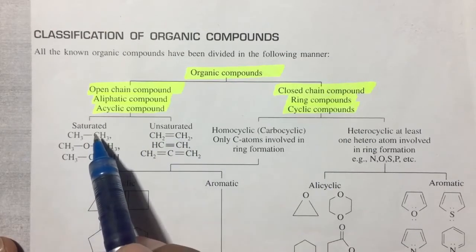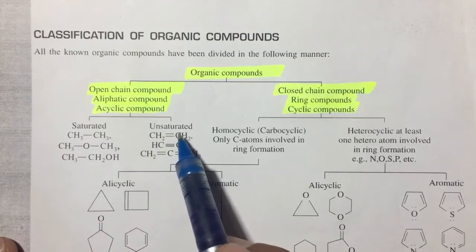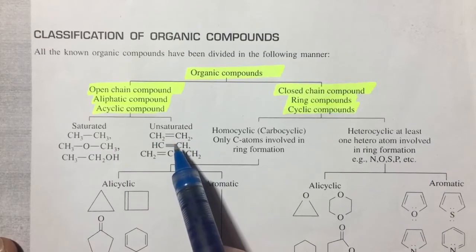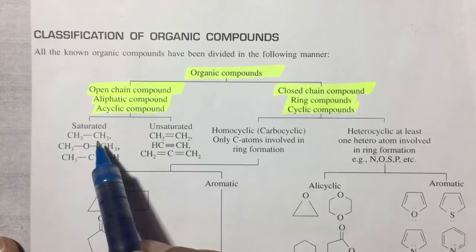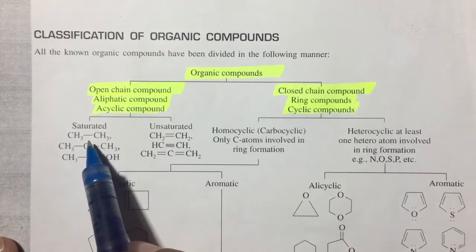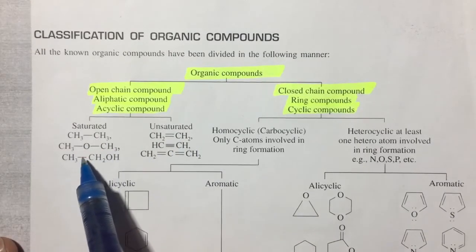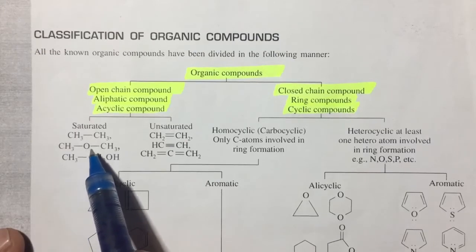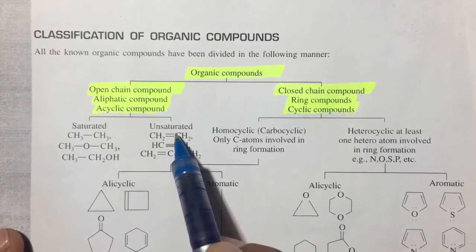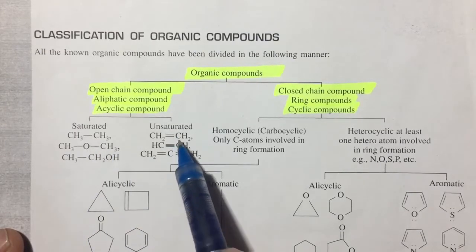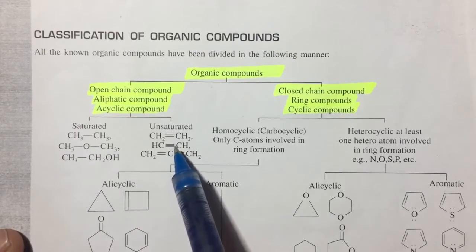Saturated hydrocarbons have single bonds, while unsaturated hydrocarbons have double or triple bonds. Saturated hydrocarbons are the main example of single bond compounds, and unsaturated hydrocarbons include those with double or triple bonds.